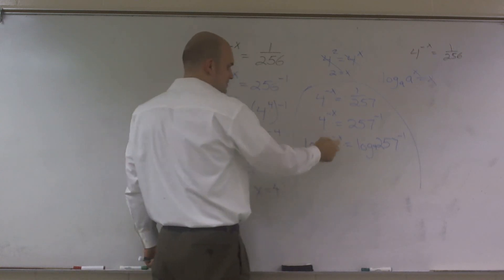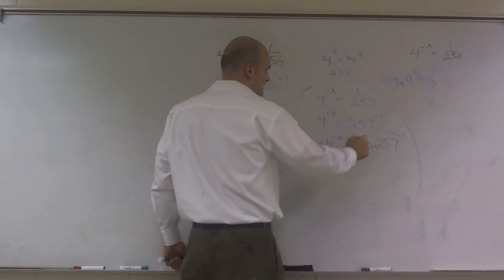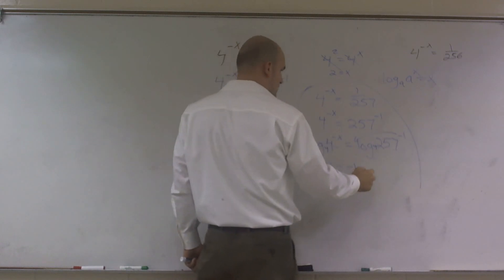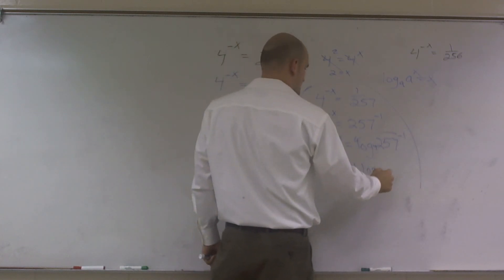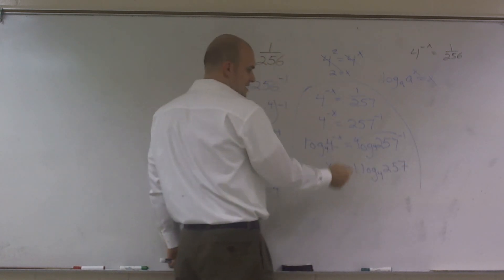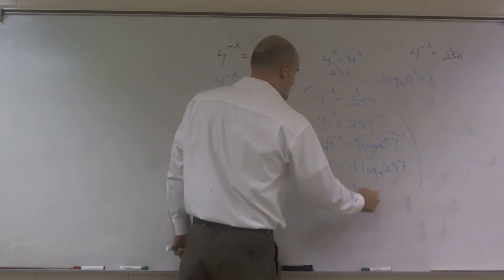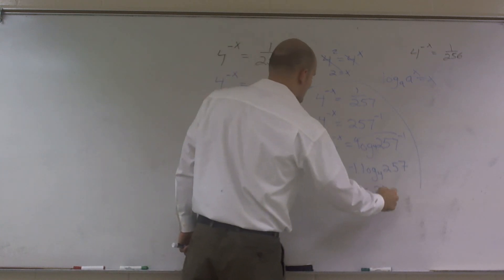Therefore, this would cancel out and I'd be left with negative x equals, I can bring this down in front, a negative 1 log base 4 of 257. I could cancel out my plus and my negative, so I'd just be left with x equals log base 4 of 257.